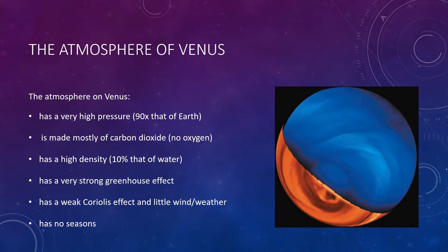If you stood on the surface of Venus, you'd feel a searing heat hotter than that of a self-cleaning oven, and a tremendous pressure 90 times greater than that on the Earth. A deep-sea diver would have to go nearly 0.6 miles beneath the ocean surface on Earth to feel a comparable pressure.